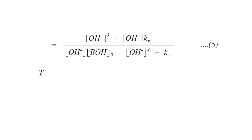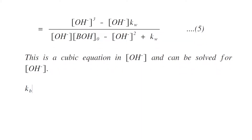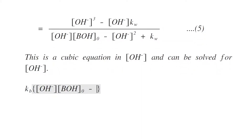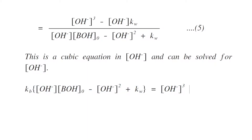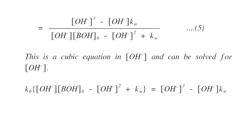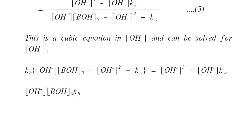This is equation number five — a cubic equation in [OH⁻] that can be solved for [OH⁻]. Rearranging, we get Kb([OH⁻]·[BOH]₀ minus [OH⁻]² + Kw) equals [OH⁻]³ minus [OH⁻]·Kw. Opening the bracket on the left side, it becomes [OH⁻]·[BOH]₀·Kb minus [OH⁻]²·Kb plus Kw·Kb minus [OH⁻]·Kw.